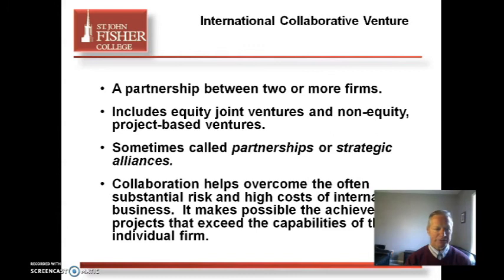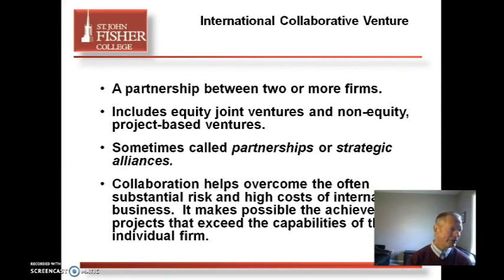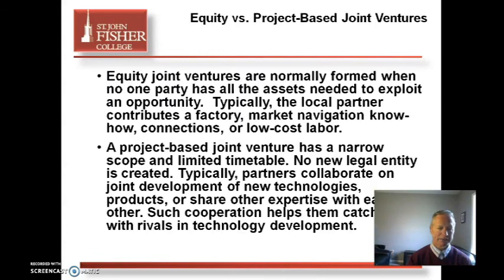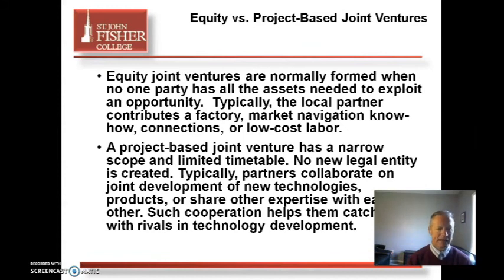A collaborative venture is a partnership between two or more firms. We've talked about strategic alliances and joint ventures. Strategic alliances often involve sharing of knowledge. Joint ventures involve sharing different things to create a product. Equity joint ventures are formed when one party has all the assets and uses somebody's knowledge or engineering. Project-based joint ventures have a narrow scope and narrow timetable.